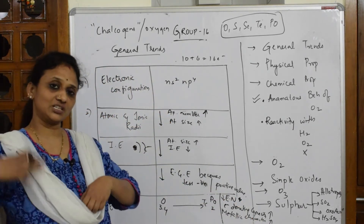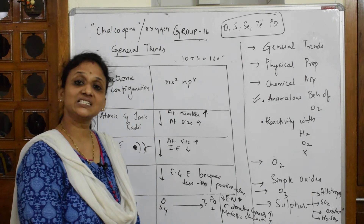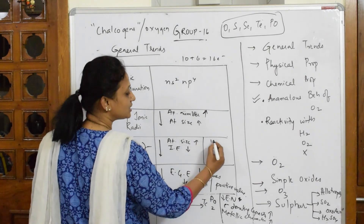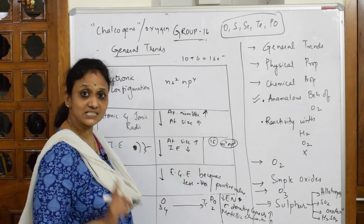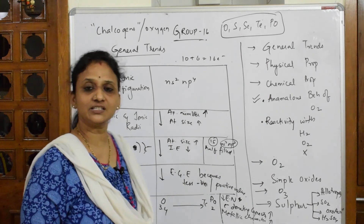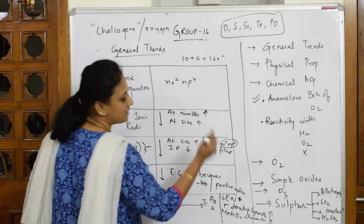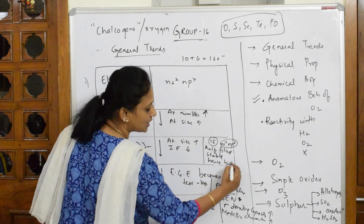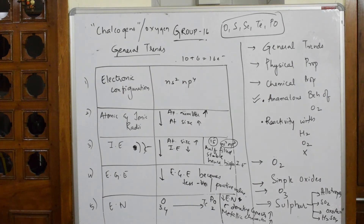One more common exam question: why is the ionization enthalpy of Group 16 less than that of Group 15? In Group 15, the configuration is ns² np³ — that's half-filled, which is stable. A half-filled configuration has higher stability, so a large amount of energy is required to break it. Therefore, Group 15 has a half-filled configuration which is stable, giving it a higher ionization enthalpy compared to Group 16.